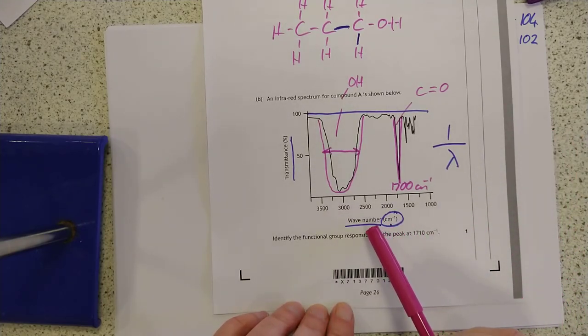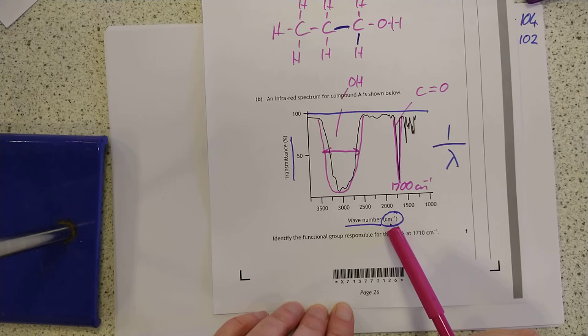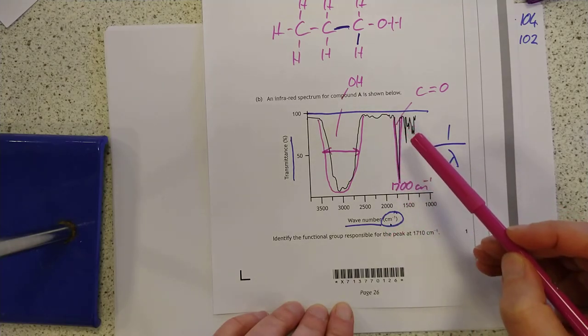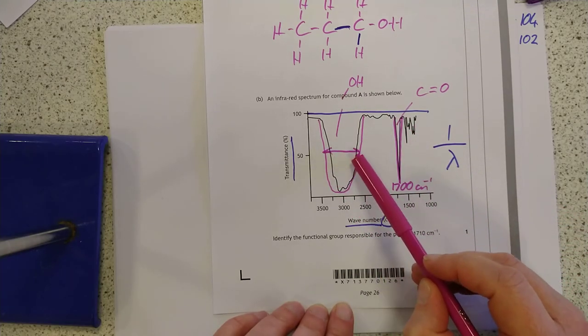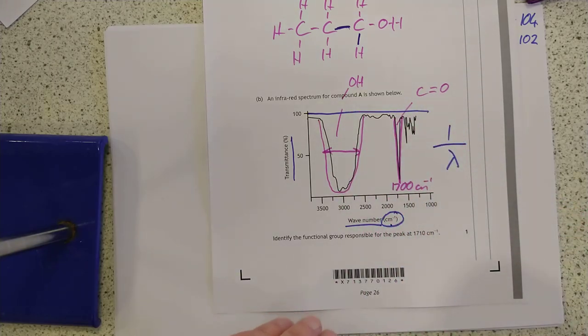The two common ones that they ask you about are 1,700, and this broad stretch here for OH and carbonyl groups, but there are other groups and they might ask you about them, so they're on page 14 of the data book.